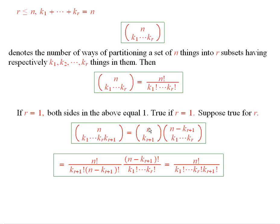You would have the number of ways of selecting a set of k sub r plus 1 things right here, and then for each of those ways, you would now have this number of ways of partitioning the remaining part of the set into a subset that has k1 through k sub r things in it. And so this formula would end up being true.